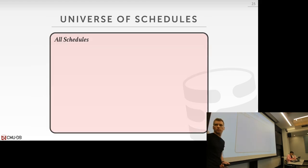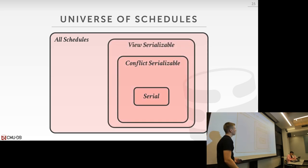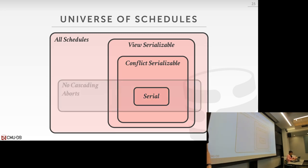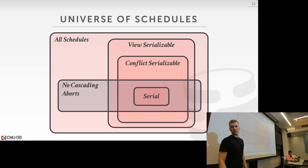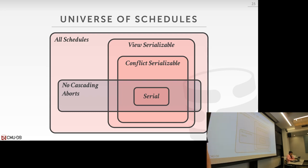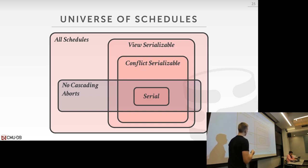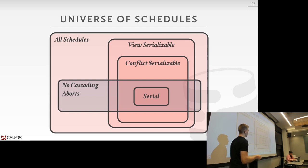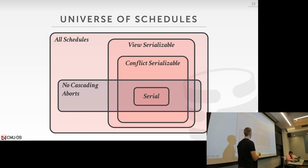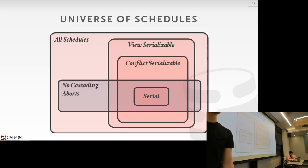Looking at the universe of schedules: serial schedules, conflict serializable schedules, view serializable. Two-phase locking lives in the conflict serializable area, guaranteeing conflict serializable schedules but susceptible to cascading aborts. Strong-strict two-phase locking lives closer to the serial region — it guarantees no cascading aborts and conflict serializable schedules.